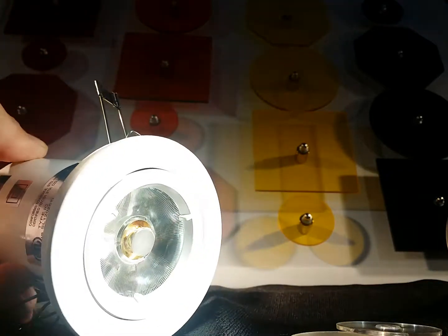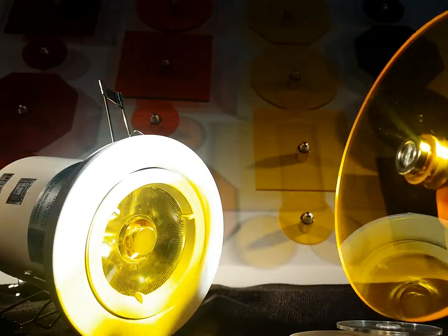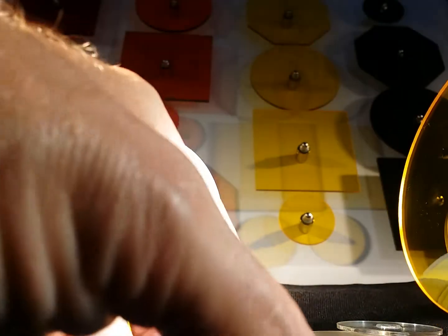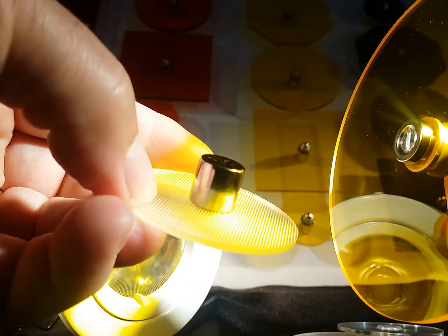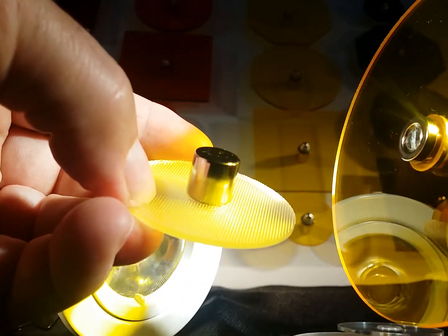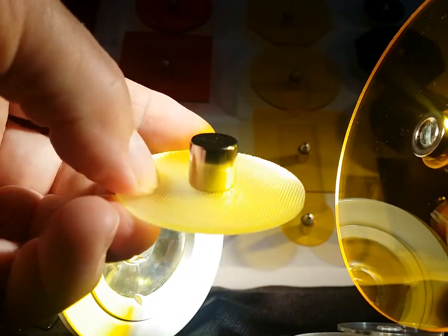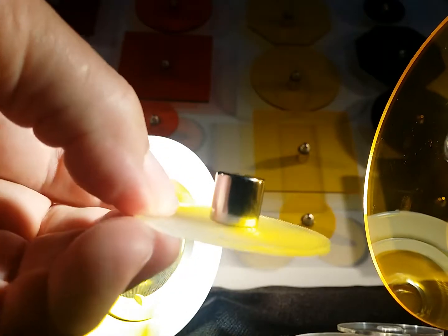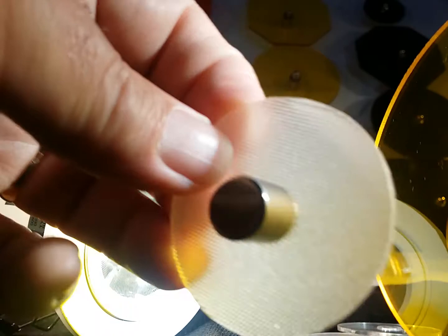You could, if you wanted to, literally put this filter on without the extending magnet. But I don't recommend it because you want to give the lamp a thermal break. Having the filter closer does not allow it to breathe as much. So I would recommend always using this half inch extender. Keep the filters away from the lamp.